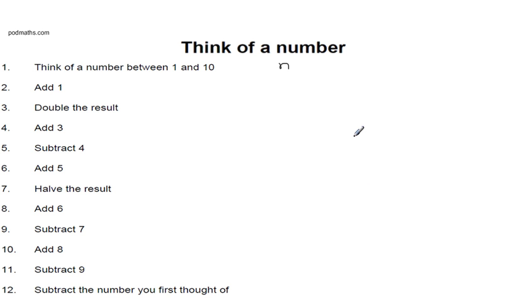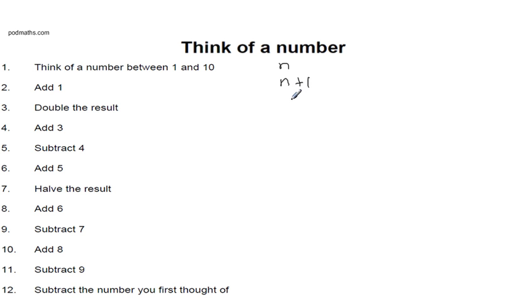Hopefully you've had a good go at that — slightly more challenging than the previous one. I'll talk it through. The first step: the letter N. Add 1 — straightforward: N plus 1. The next step: double the result. If I double the result, I need to double the whole of that expression, because that is my result. My unknown number plus 1 — I can't combine that further because I don't know what N is. So when I double the result I've got to double each individual term: double the N giving 2N, and double the 1 giving positive 2.